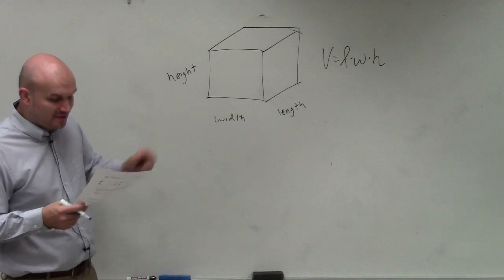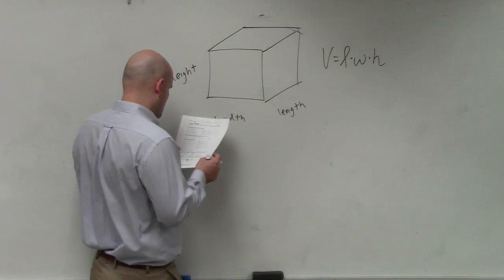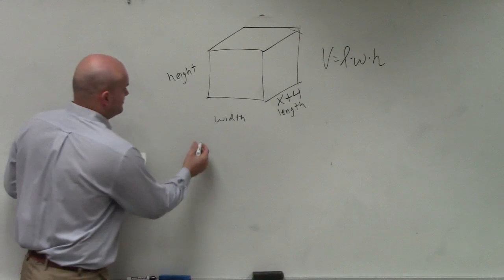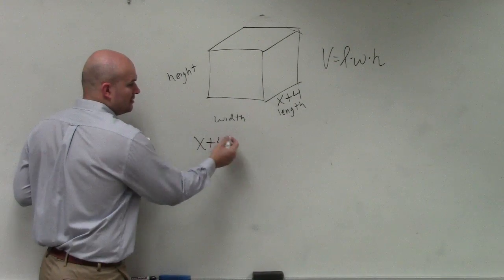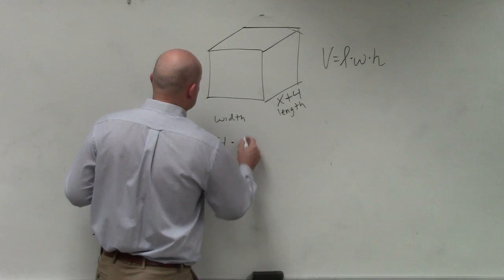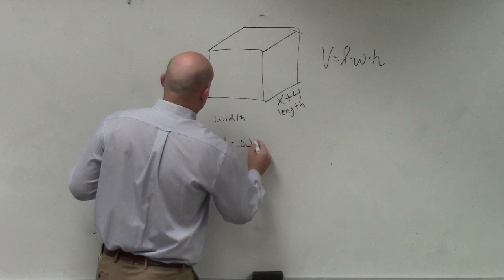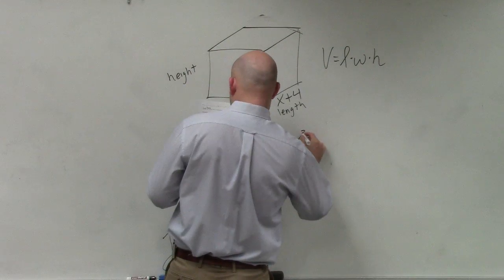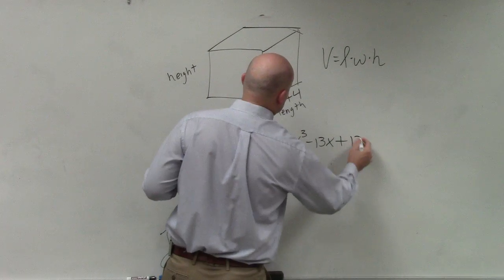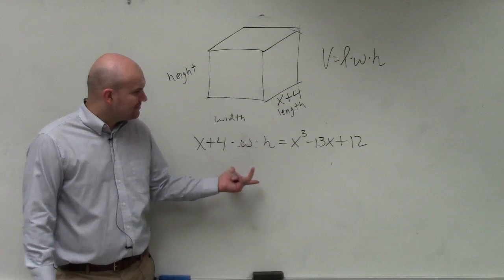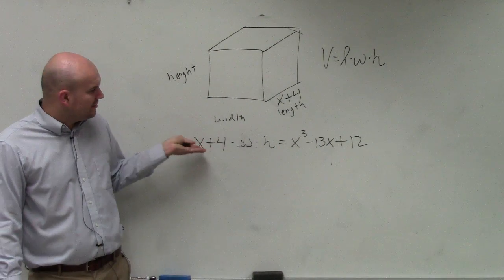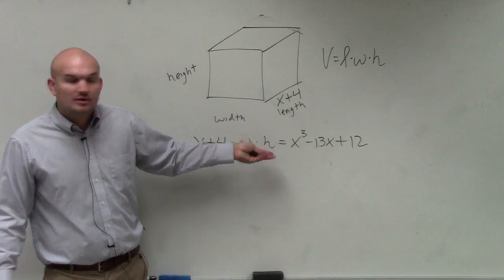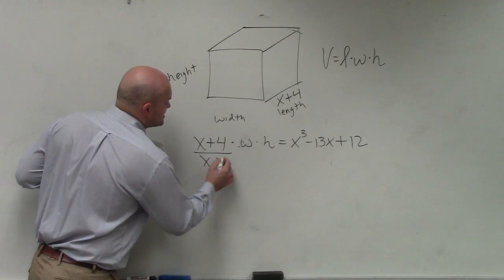So we know what one of the lengths is — the length is x plus 4. Basically what they're saying is x plus 4 times your width times your height is equal to the volume, x cubed minus 13x plus 12. So let's think about this — how could we solve for w and h? If you need to solve for w and h, you could divide by x plus 4.